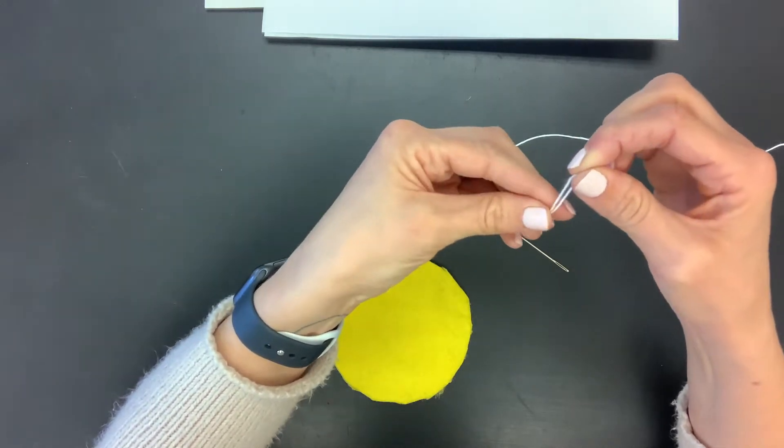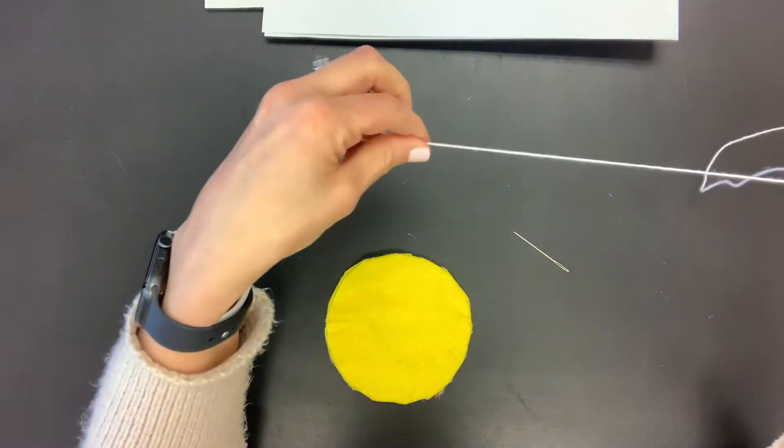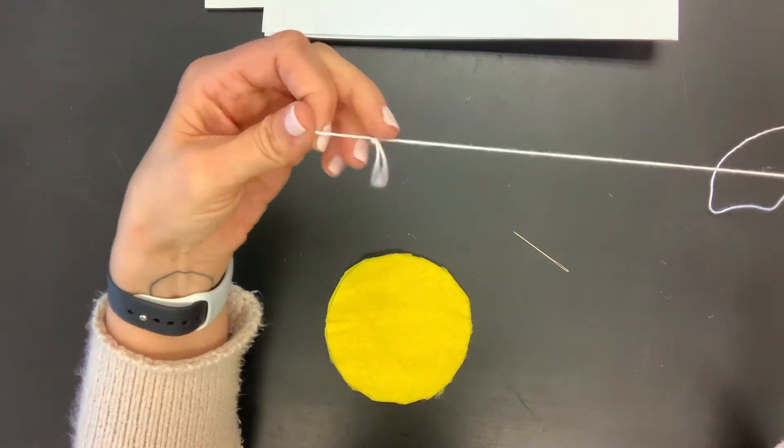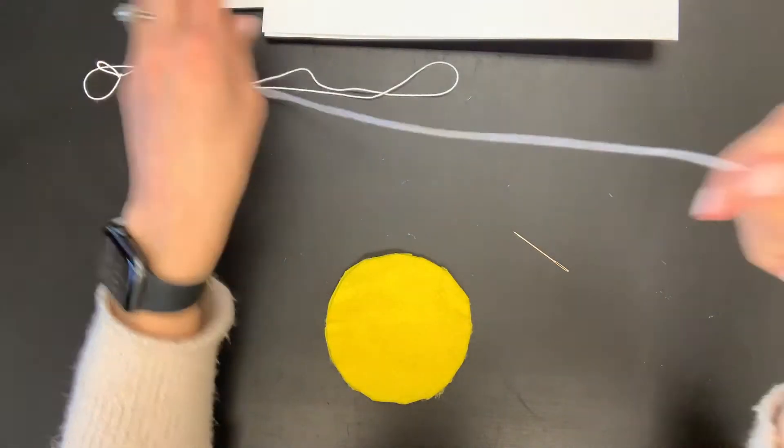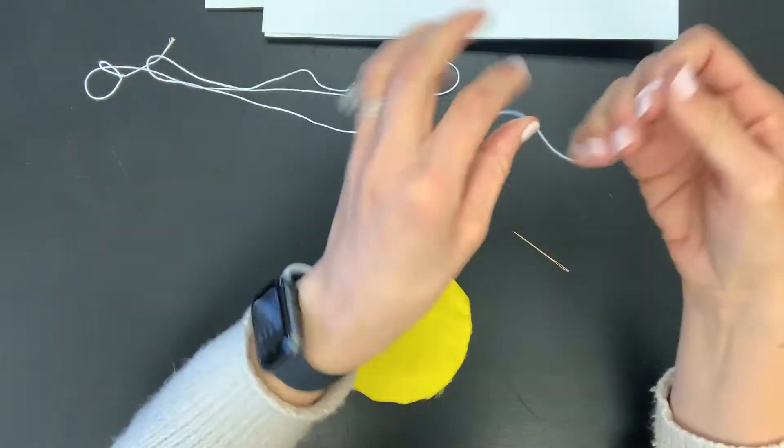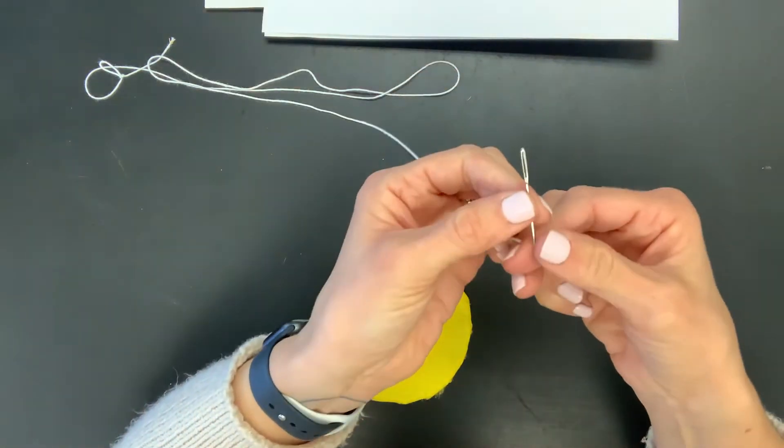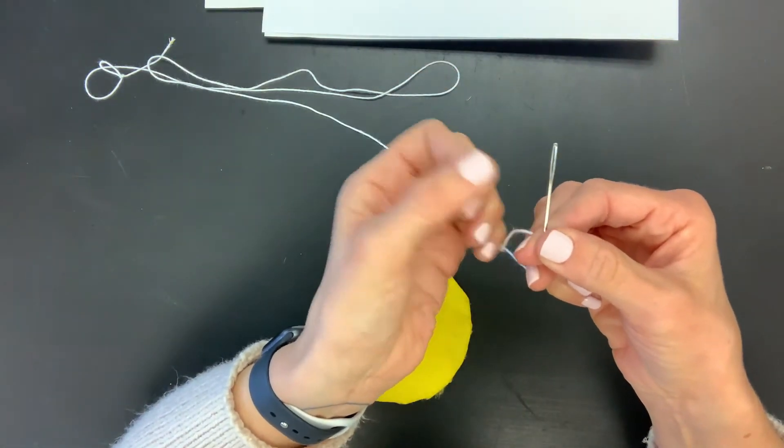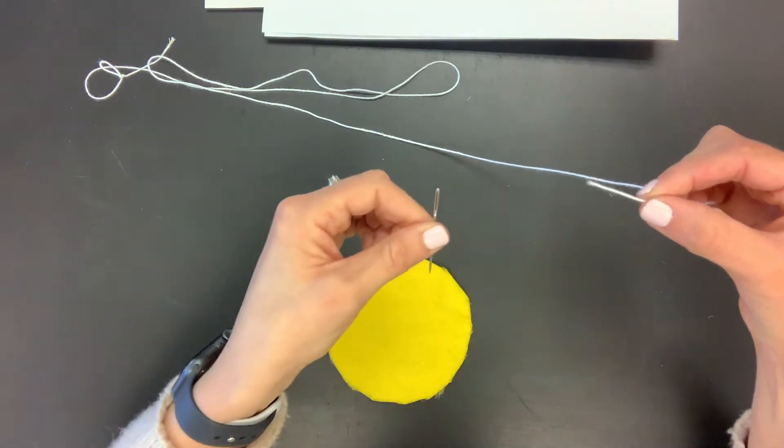So we now have a little knot at the end, okay? That's important because we don't want our string to pull the whole way through our project. So now we have our other end without the knot, and we need to take this and we need to get it through the hole in the needle, which is called the eye of the needle. So I have a really handy trick for you guys to do this.